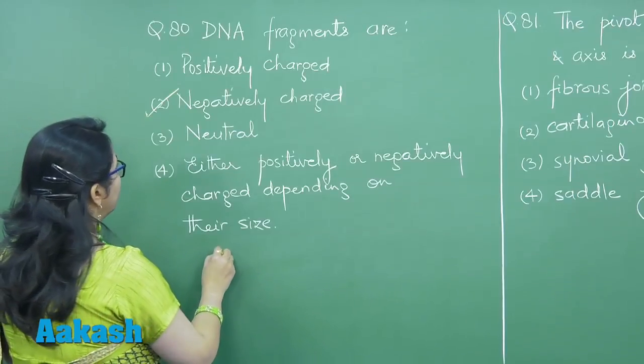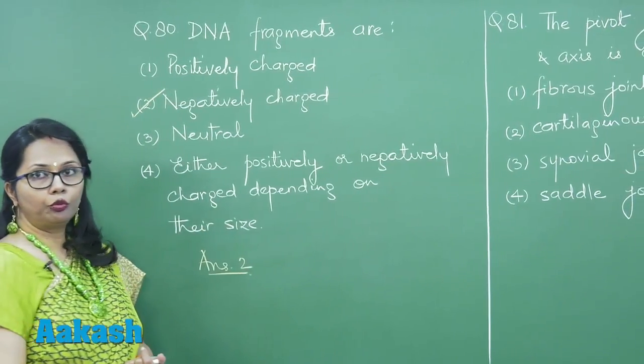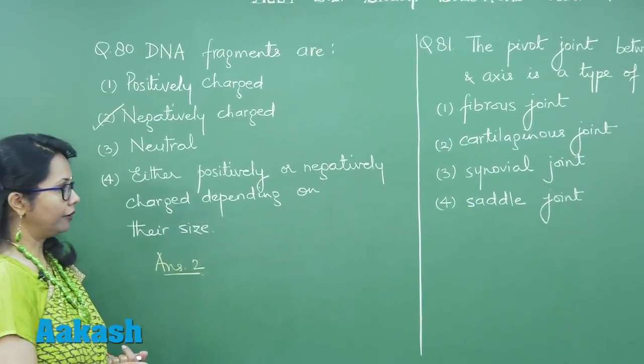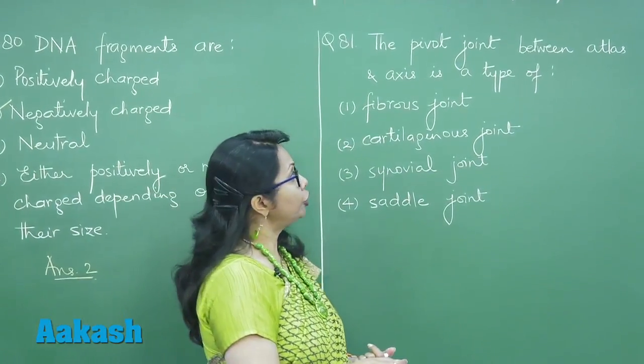That is answer 2. Let us move on to the next question 81. Now the pivot joint between atlas and axis.